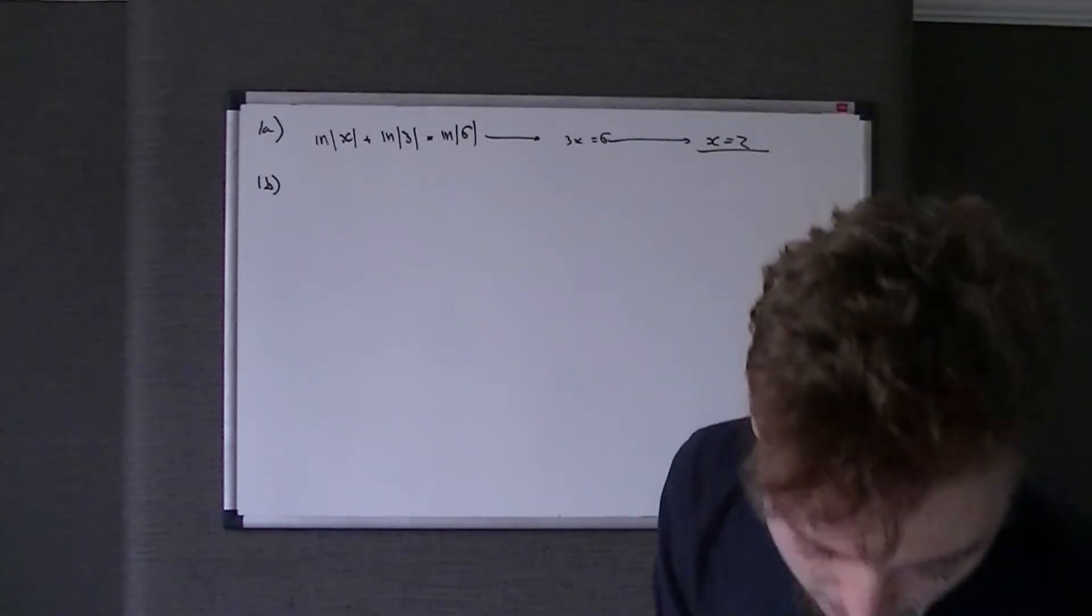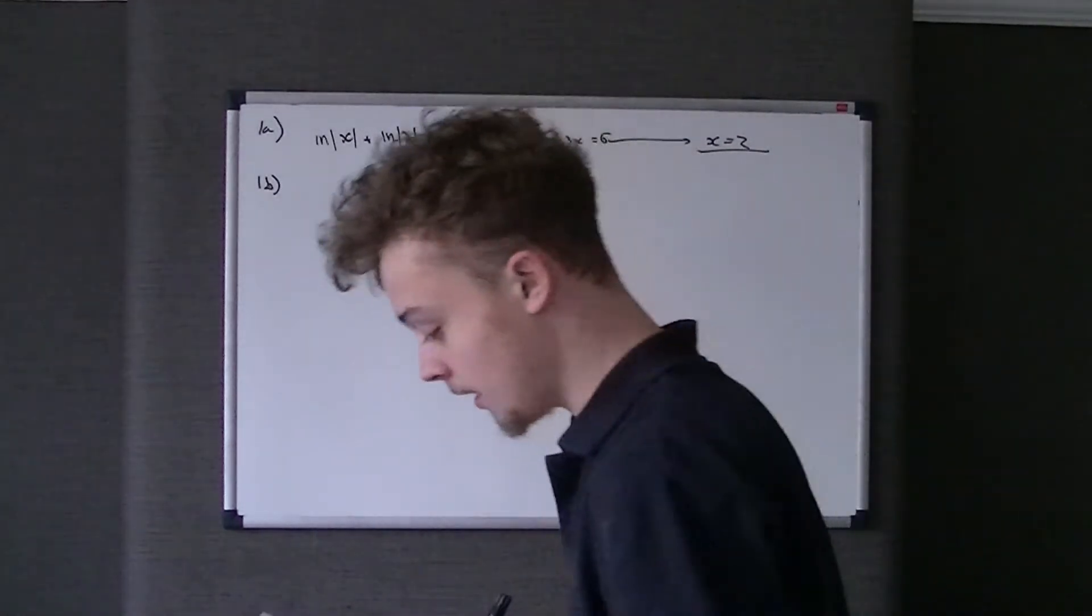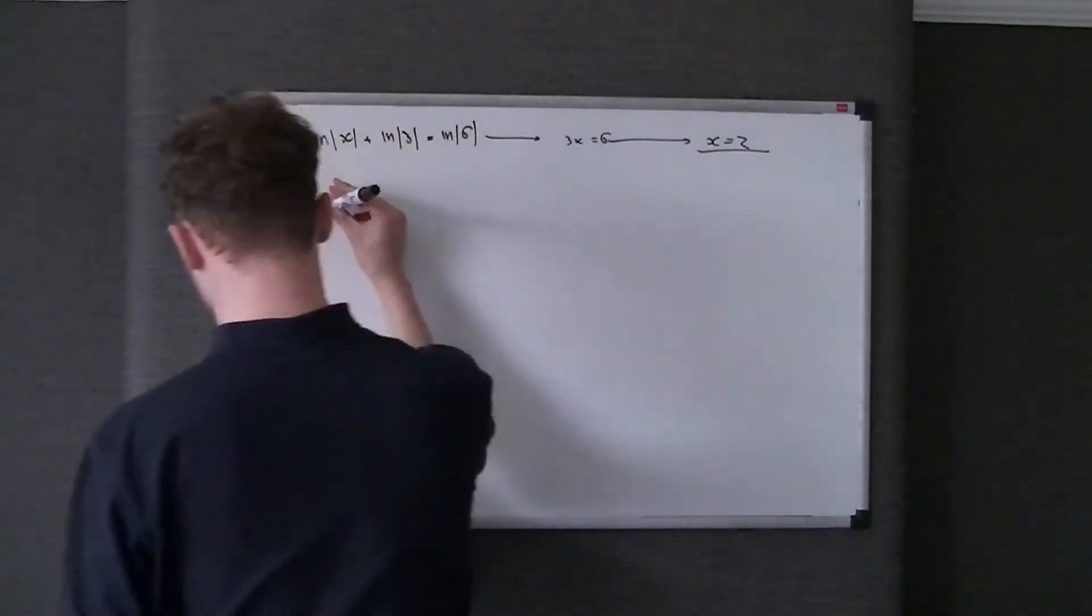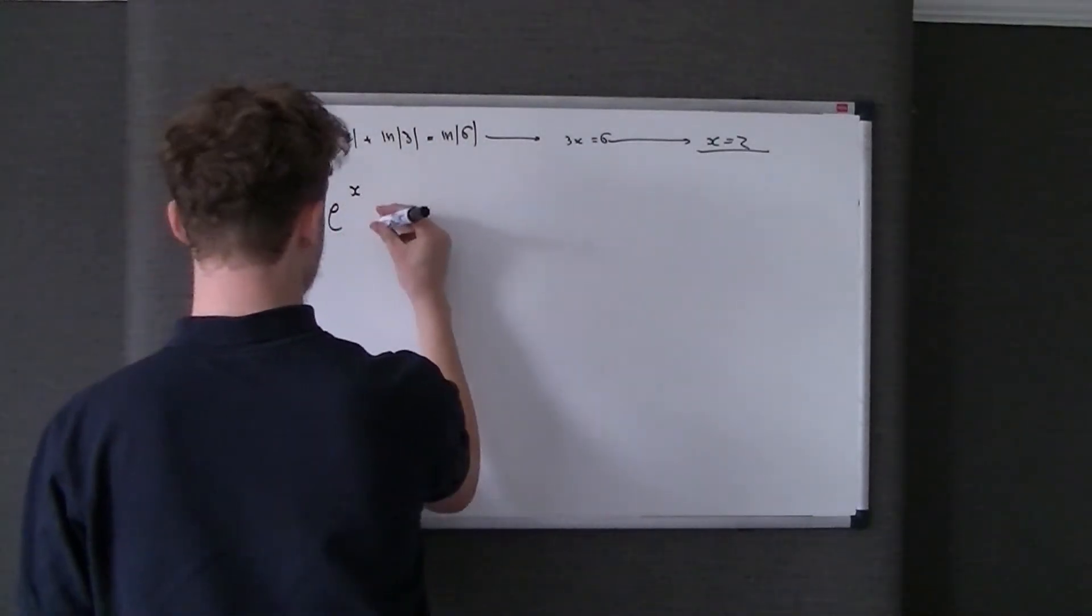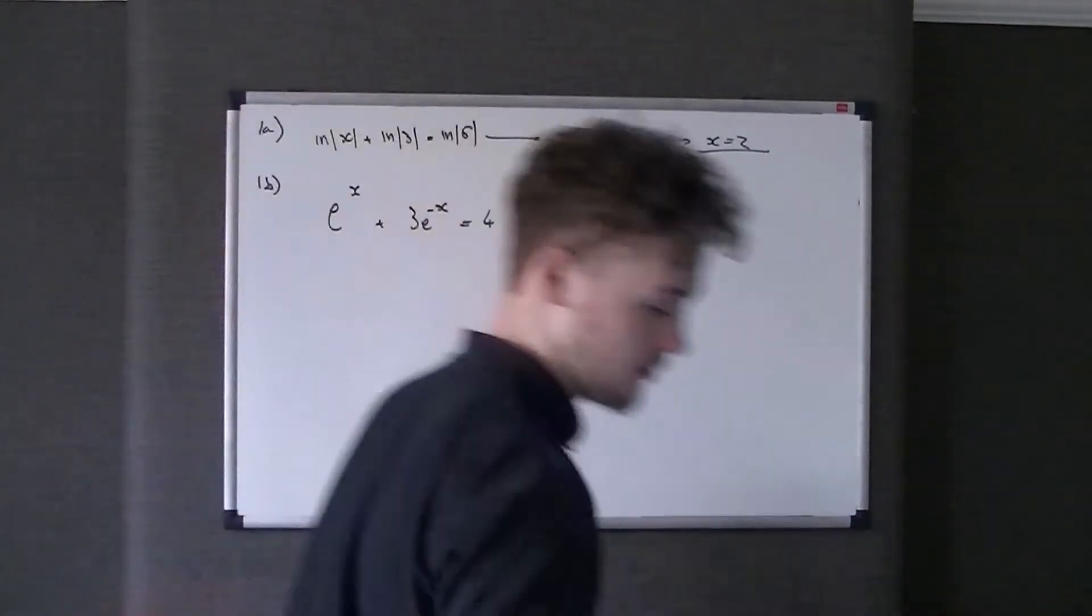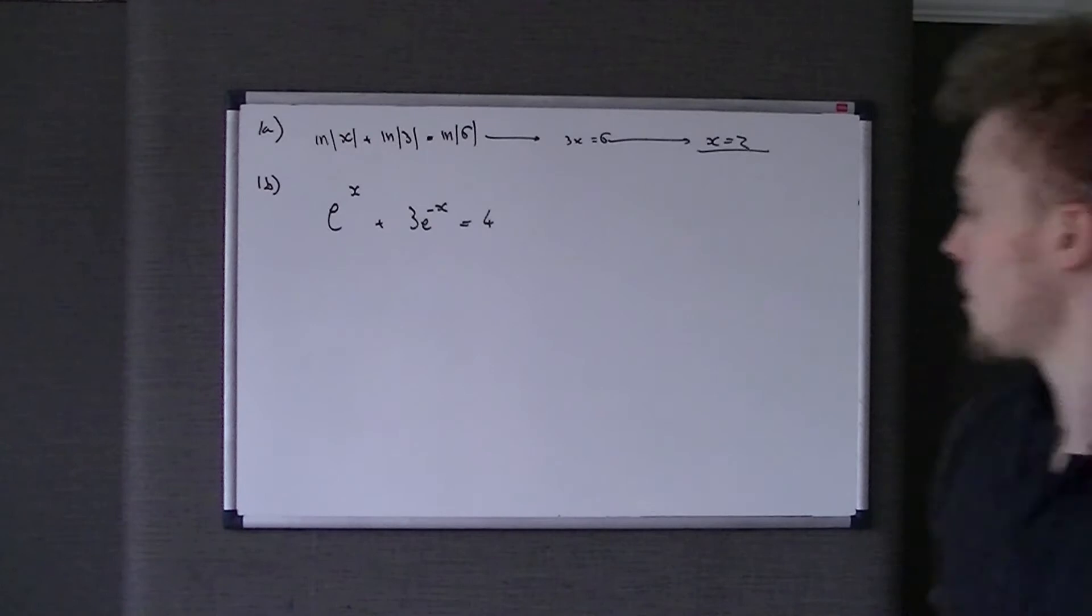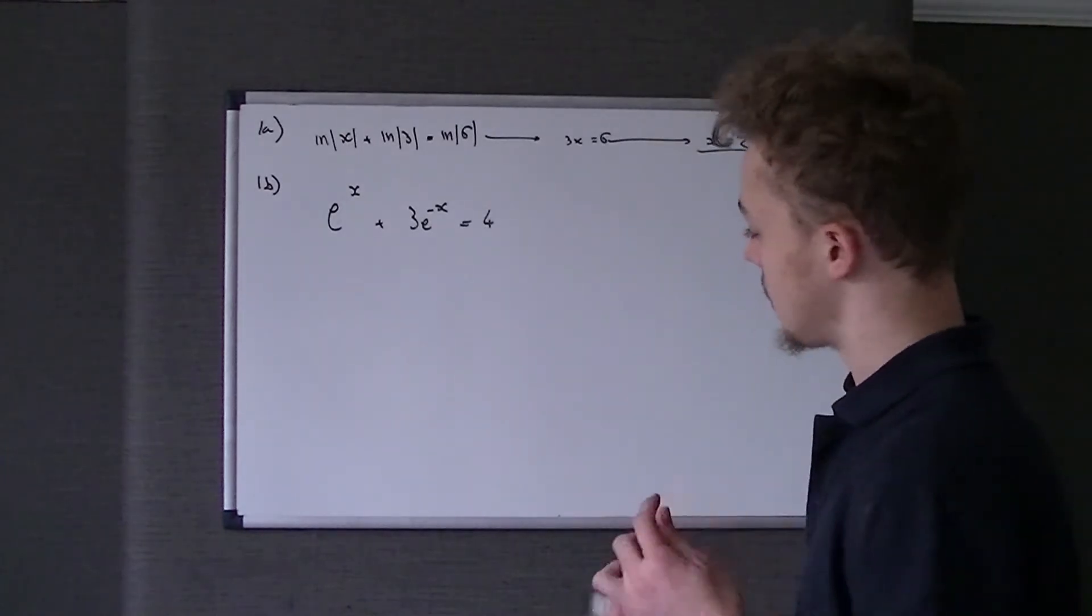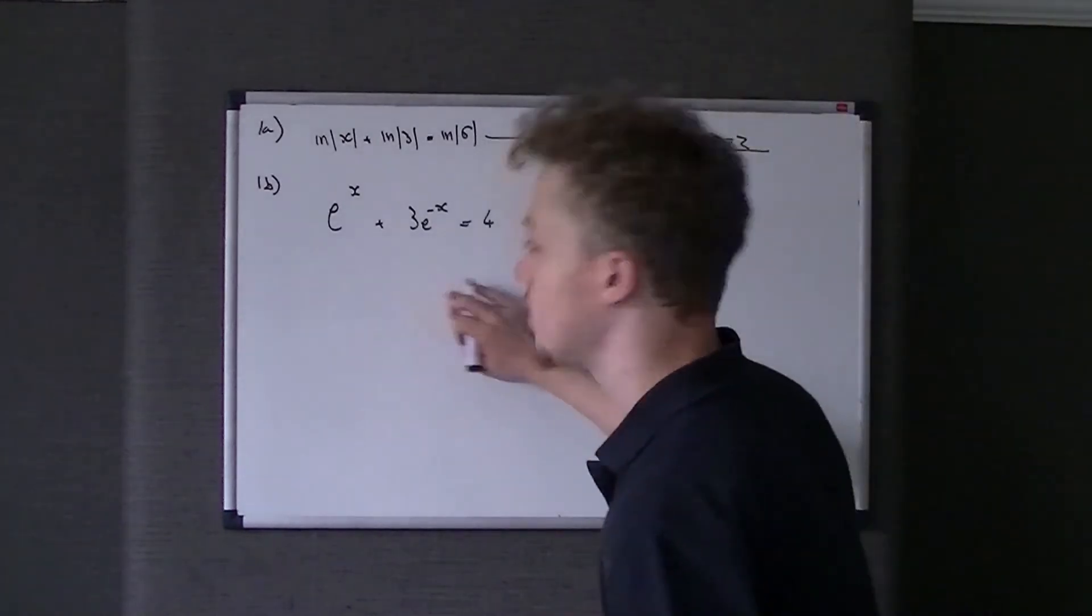This next one's a little bit more complicated. So what we've got here is e to the x plus 3e to the minus x equals 4, and we're asked to find x from that. Well, the first thing I would do, obviously there's nothing really you can do, maybe you could take x out, e to the x is a common factor.